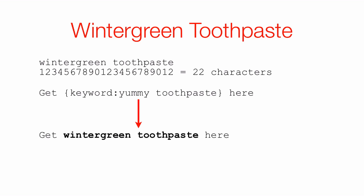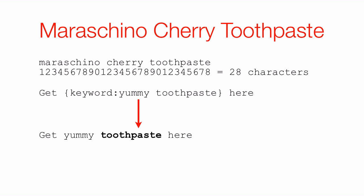Wintergreen toothpaste would be bolded because the keyword always appears bolded in the ad. However, if you also included in that same ad group the keyword 'maraschino cherry toothpaste' — that's 28 characters — then if someone typed a search term that triggered that keyword, you would see 'get yummy toothpaste here.' And the word 'yummy' would not be bold, but the word 'toothpaste' would.